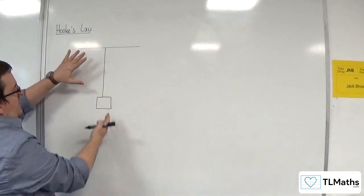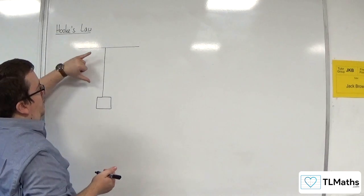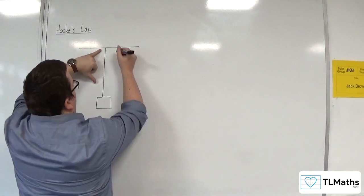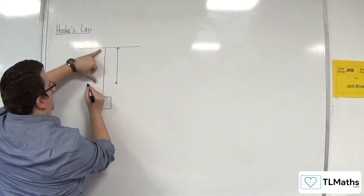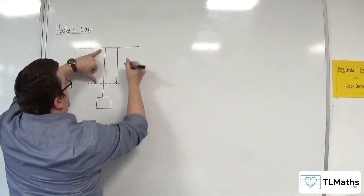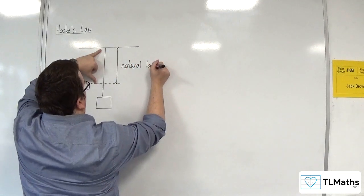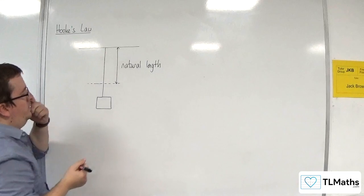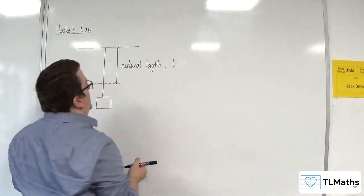Now, if you've let that hang, then the string itself will have a natural length, as it's referred to. OK, so this will be its natural length, which we can write as L, as natural length.